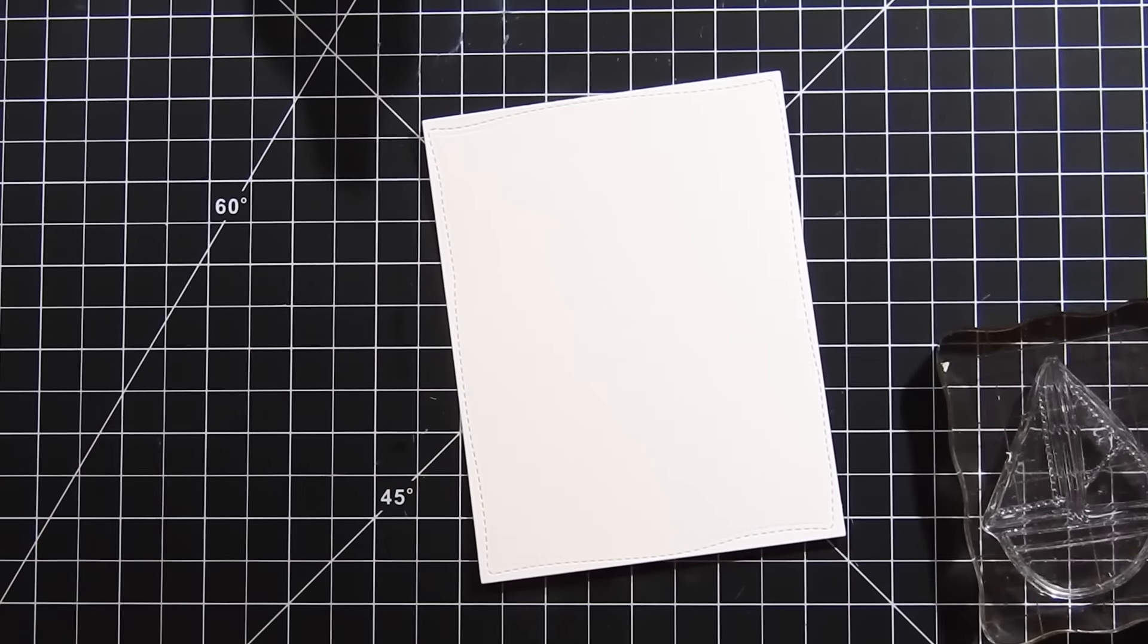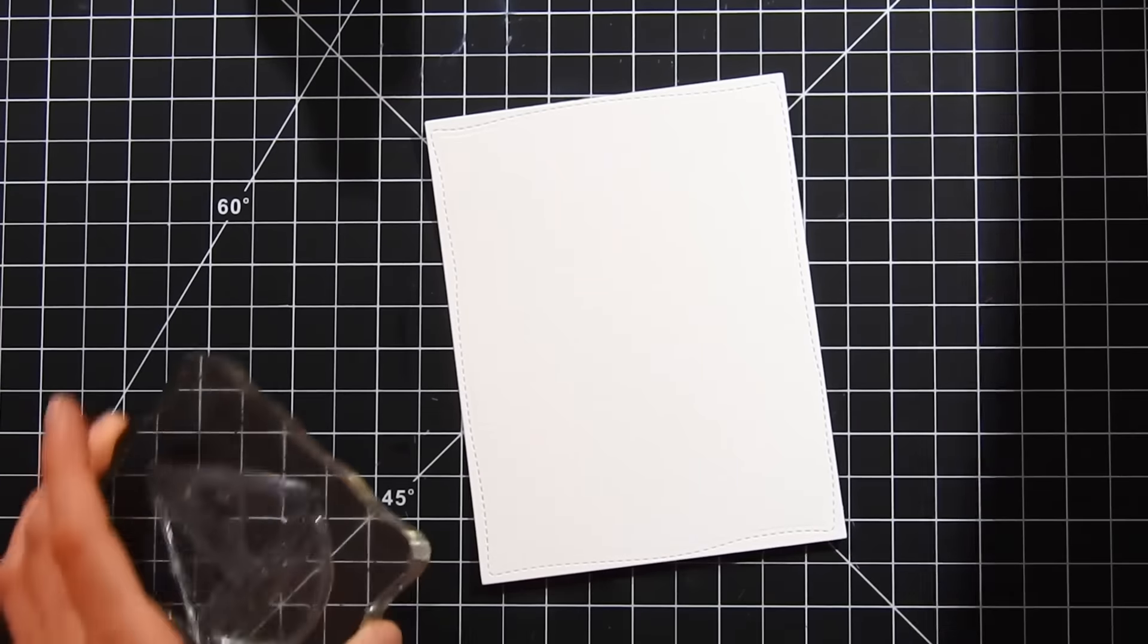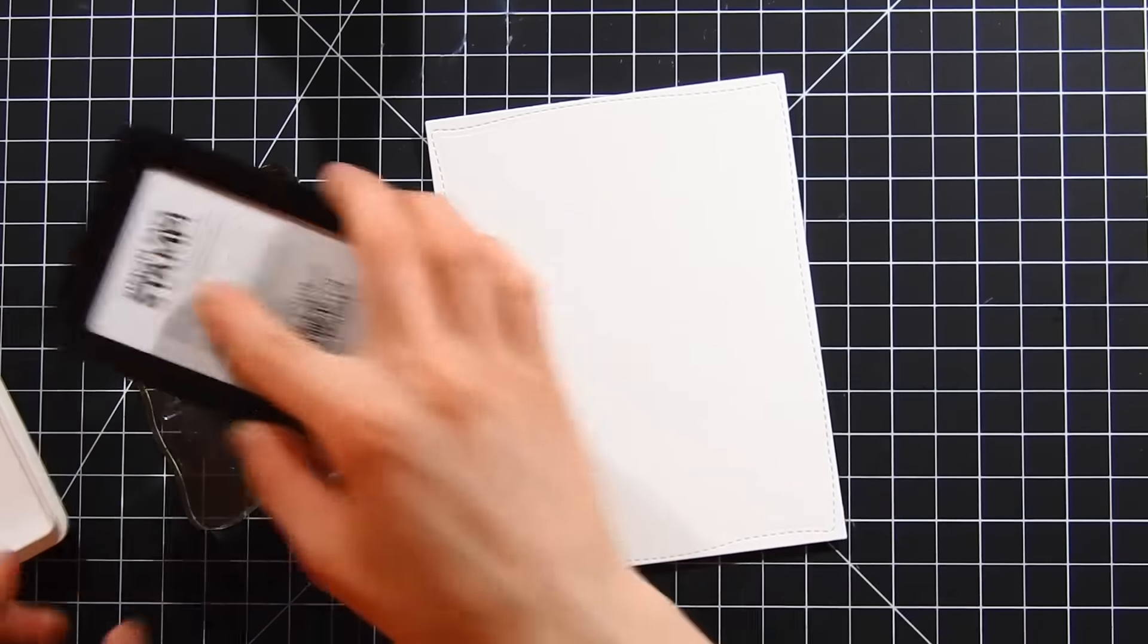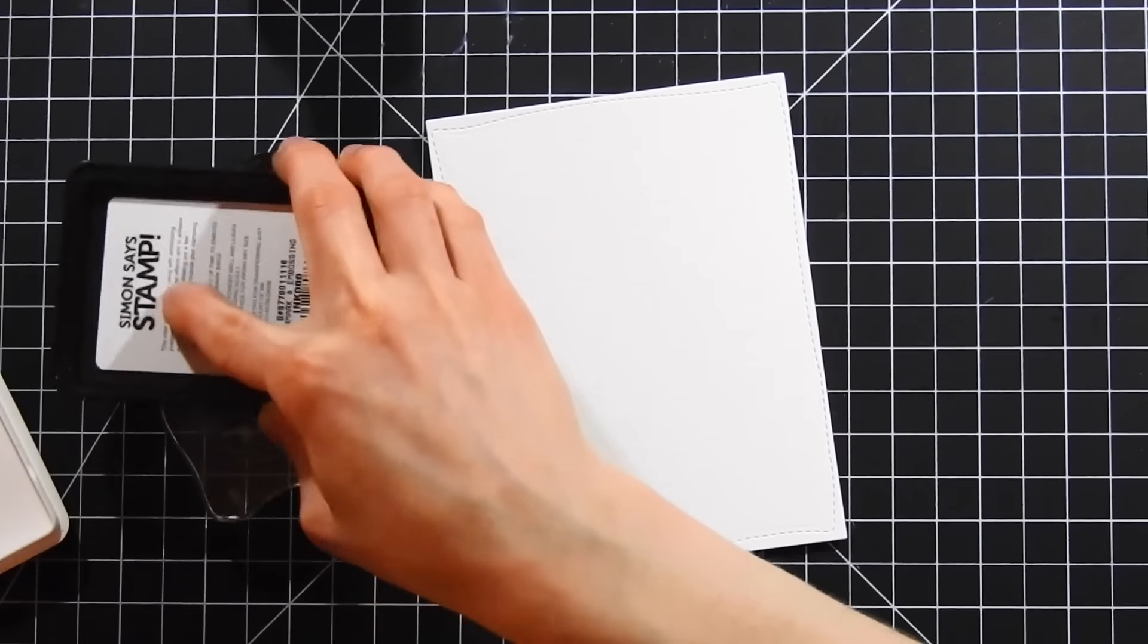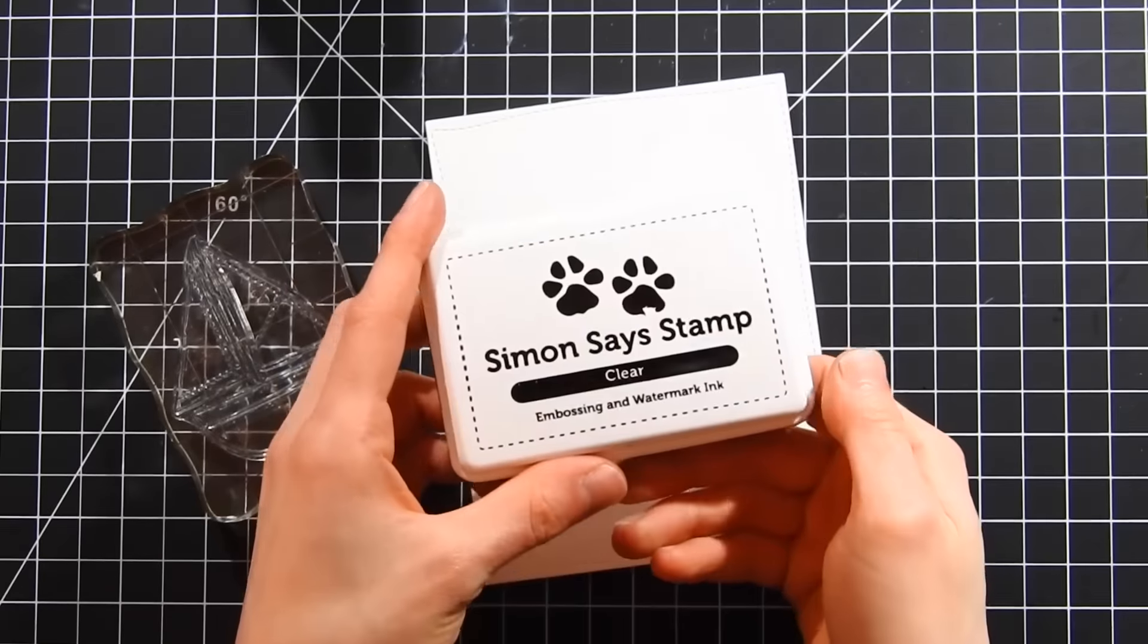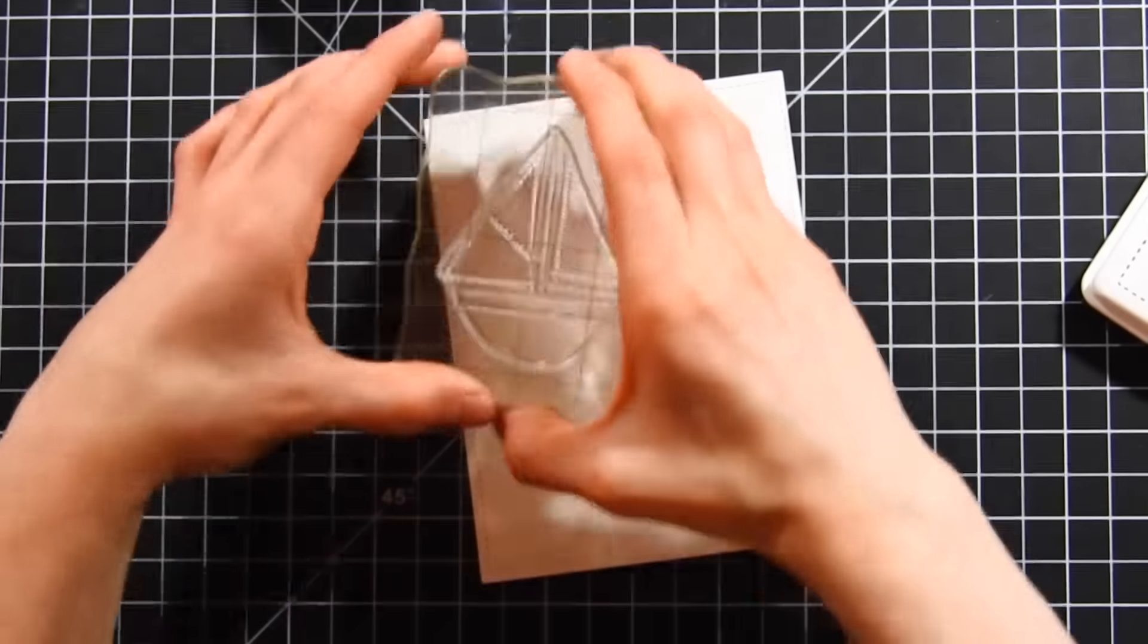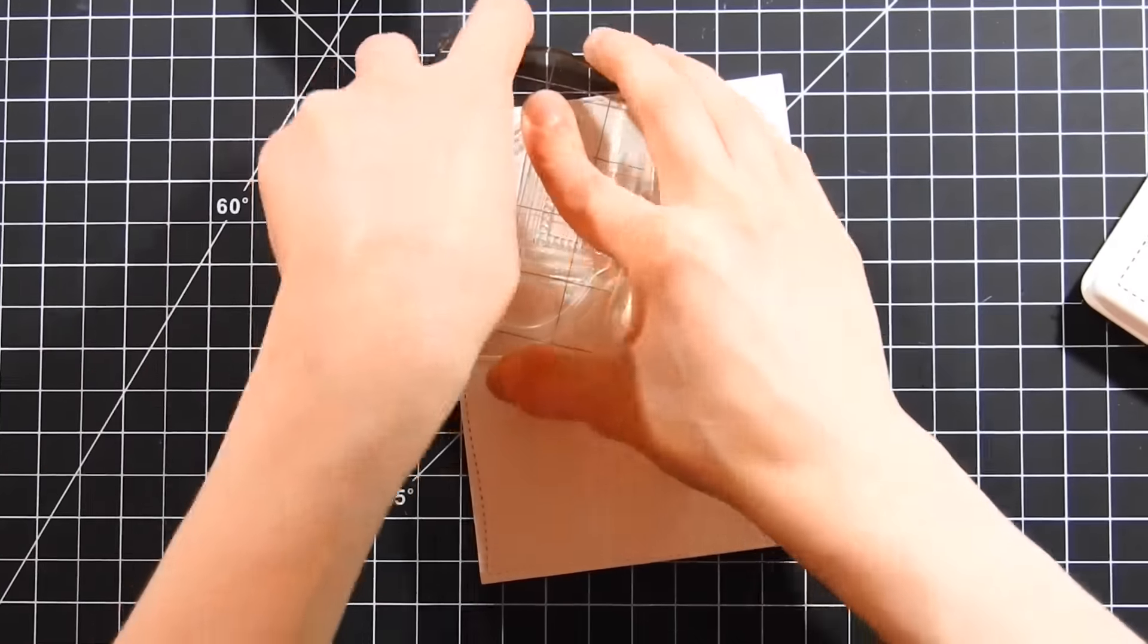I'm going to do my stamping with some Simon Says Stamp clear embossing ink. I love this ink for all of my embossing needs—it's really great. I'm gonna go ahead and start stamping my little sailboats onto this card.